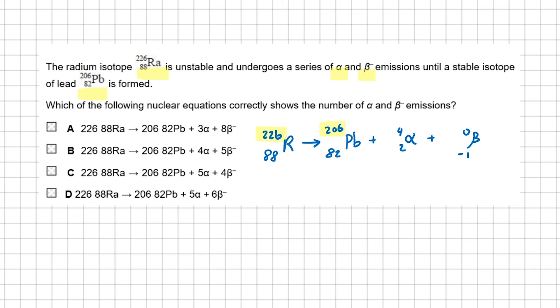So I gotta think, how many alpha decays will reduce the mass number by 20? That has to be 5. And after 5 alpha decays, the atomic number on the right-hand side increases by 10. And that totals to 92.